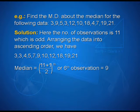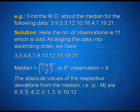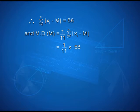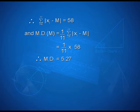Median = ((11 + 1) / 2)th = 6th observation = 9. The absolute values of the respective deviations from the median |xi − M| are: 6, 6, 5, 4, 2, 0, 1, 3, 9, 10, 12. Therefore, Σ|xi − M| = 58, and mean deviation about median = (1/11) × 58 = 5.27.